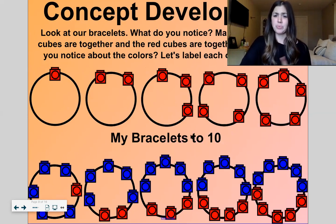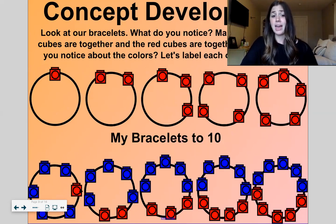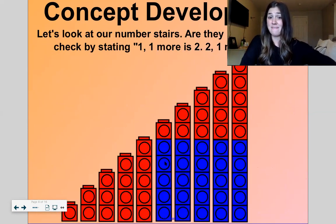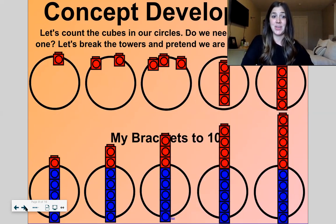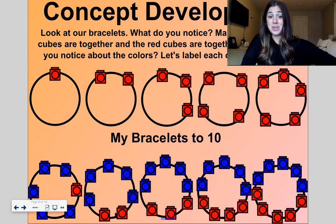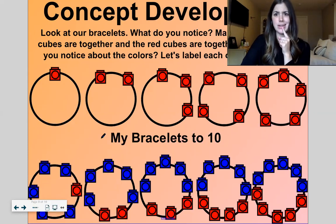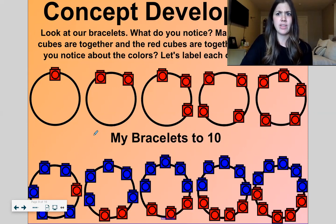So look at our bracelets. What do you notice? We made sure that the blue cubes are together and the red cubes are together. I notice about their colors we have one through five that are all red. I notice that. Then down here, just like in our towers over here, we have five blue and one more red to make six. I notice we have more blue than red. More blue than red. More blue than red. But now here at ten we have five and five. That makes ten. What do you notice? Anything different that I didn't notice? Send me a message if I missed something and you noticed something interesting.